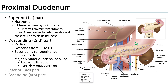The first part of the duodenum is contiguous with the pyloric part of the stomach. The L1 vertebral level is at the transpyloric plane, and that is the level at which the pylorus feeds into the duodenum. The stomach ejects chyme into the duodenum for further chemical digestion and absorption.